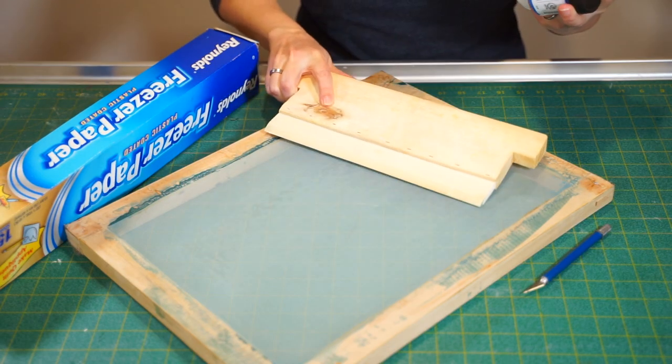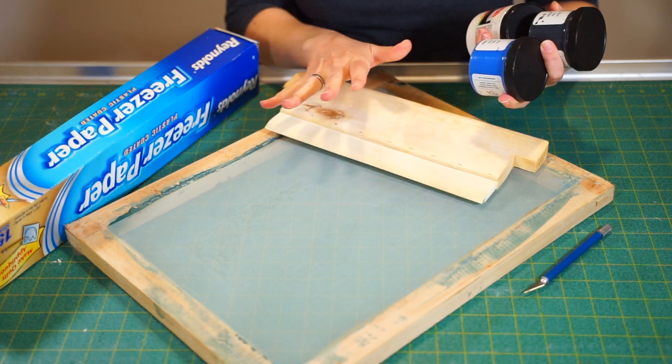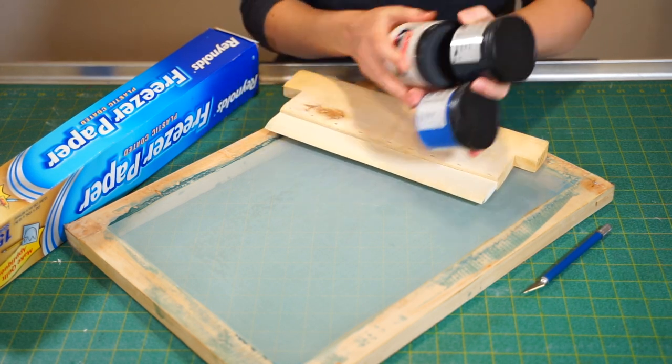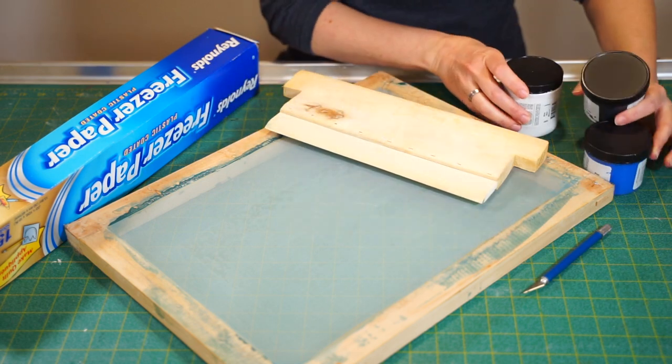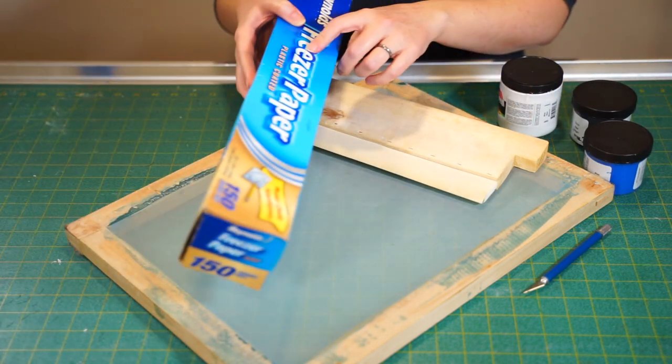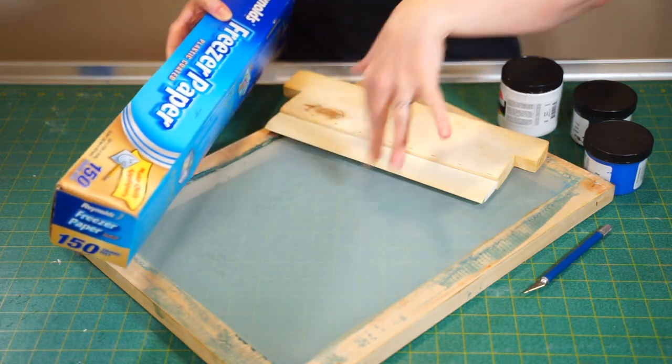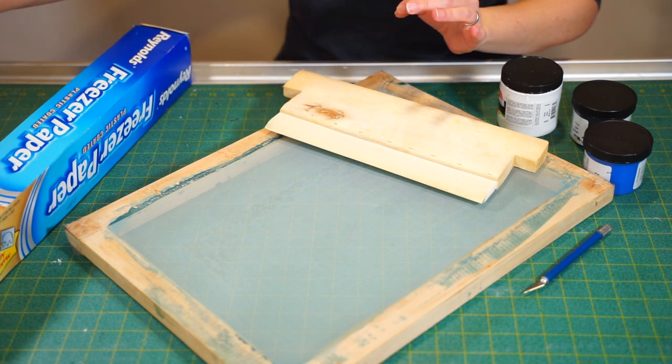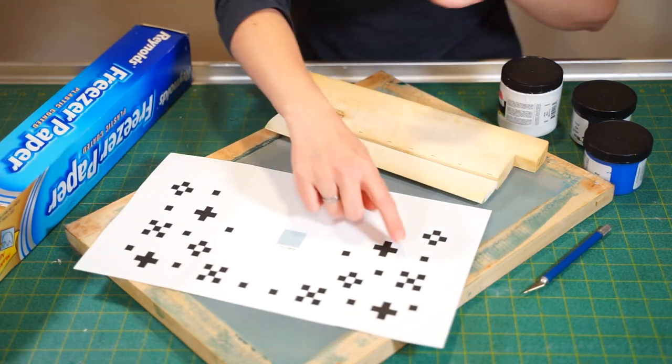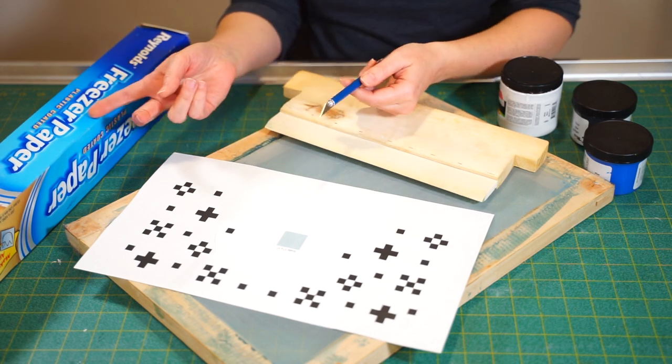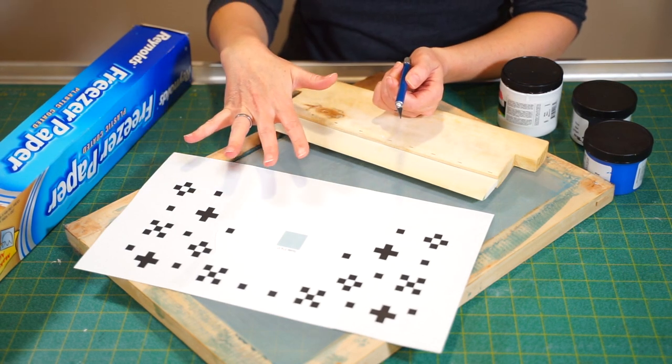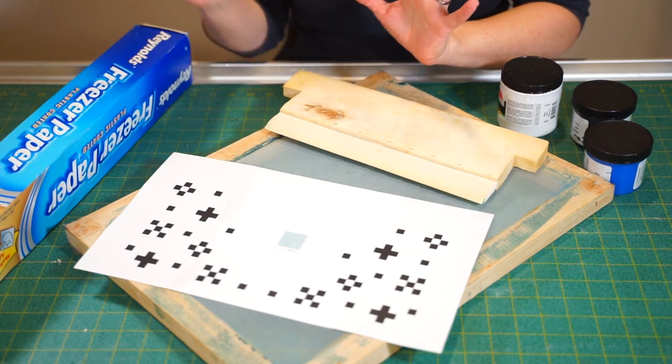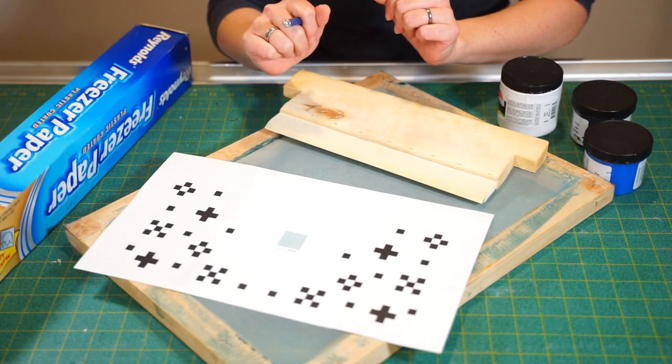Now that we're done with the fabric, we can move on to the screen print, which I think is so much fun and it doesn't require too many new supplies. You'll need a screen, a squeegee, and of course you're going to need some ink. The only other thing is going to be large freezer paper in order to cover your screen.